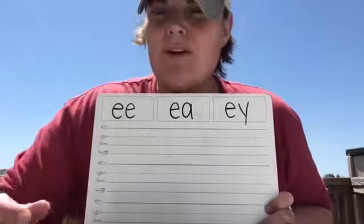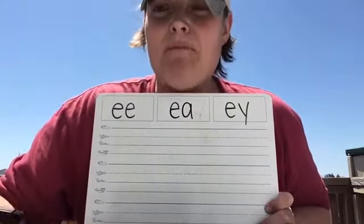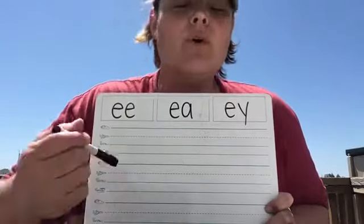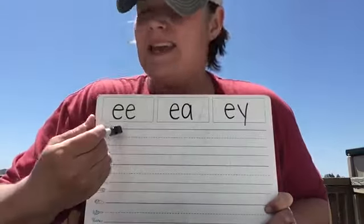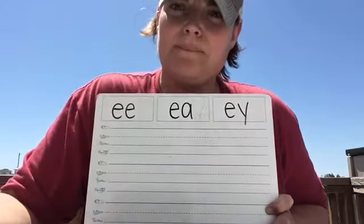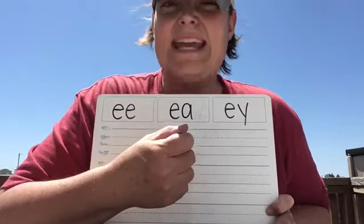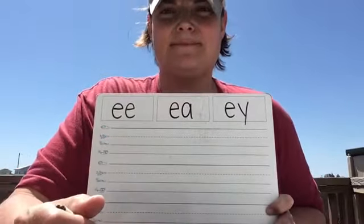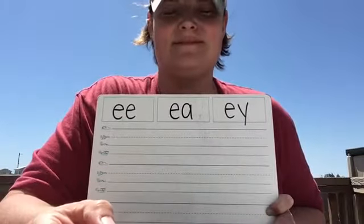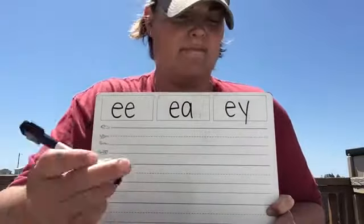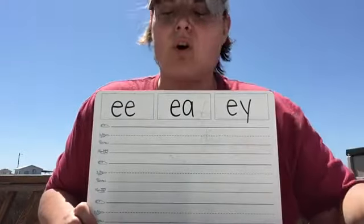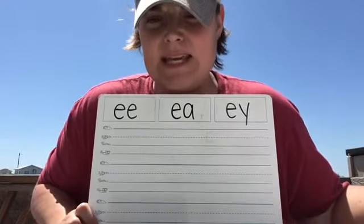All right. So what I've written on the top of my board are three vowel teams. We're going to echo them right now together. E, E. E, A, eat, ee. E, Y, key, ee. These vowel teams, although made up of different letters, all say the sound ee.